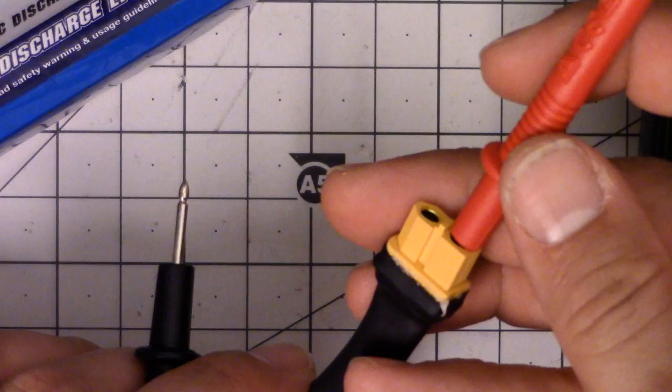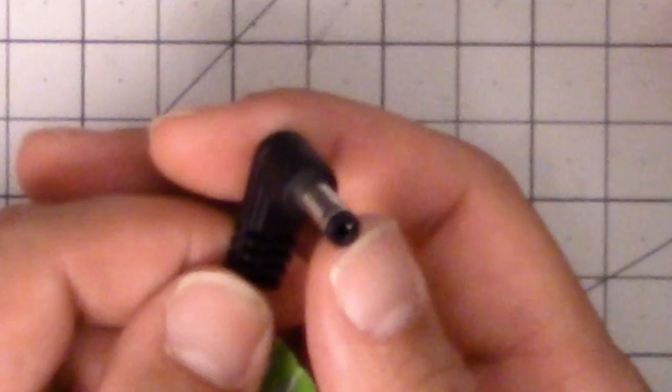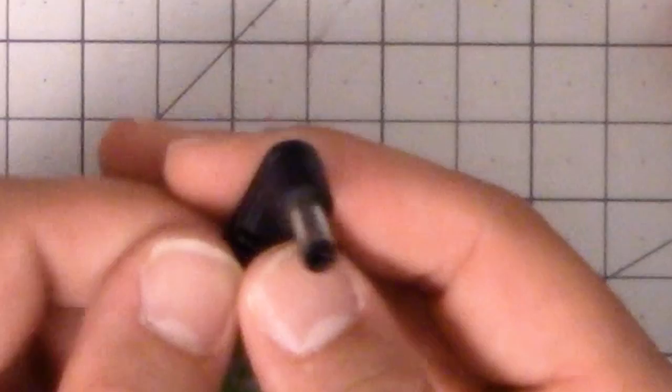Now, this is a common 5.5mm by 2.1mm barrel plug. It's probably the most common kind of barrel plug that you're going to encounter in this hobby. 5.5mm refers to the diameter of the outside, and 2.1mm refers to the diameter of the pin that goes in the center. Another common size is 5.5 by 2.5, which is the same outer diameter, but a bigger pin, a thicker pin.